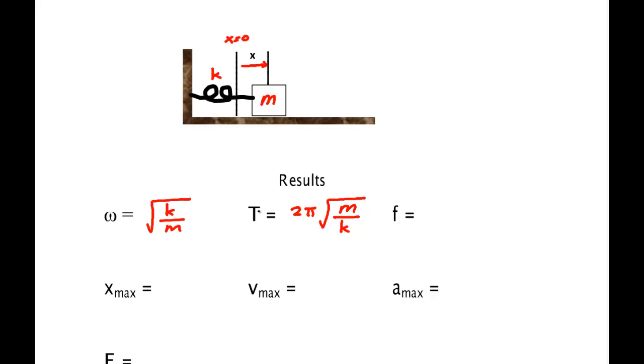The frequency is 1 over the period, so it's 1 over 2π times the square root of the spring constant over the mass. The maximum displacement, well this is always the amplitude. The maximum velocity we'll show is the amplitude times the angular frequency. So it depends on the amplitude, the spring constant and the mass. The maximum acceleration we're going to show is equal to the amplitude times ω squared.